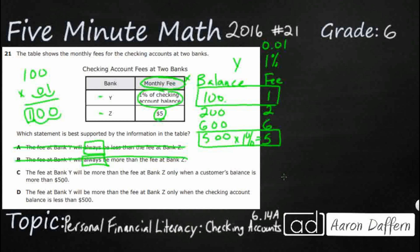Let's see what we have for D. The bank fee at Y will be more than Bank Z only when the checking account balance is less than — okay, so it's the same as C and D, except they're just using 'more' or 'less' as our options. We know 'less than' is incorrect. So our answer is going to be C.